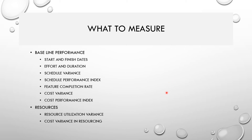Resource metrics include resource utilization variance — how many resources were planned versus actual capacity utilization. For example, are you maintaining 80 to 90 percent utilization, keeping variance below 10 percent? You also track the budget for human resources versus the actual resources being used, and the variance between them.